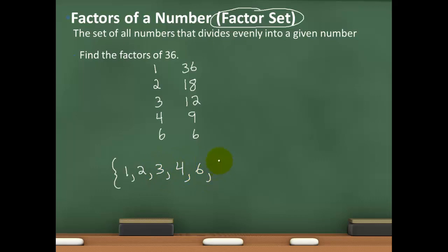Notice I don't have to write 6 twice — it's already in my factor set, so no need to repeat it. My factor set for 36 is {1, 2, 3, 4, 6, 9, 12, 18, 36}.